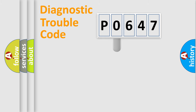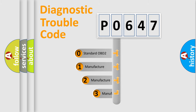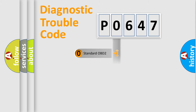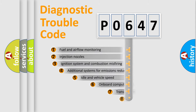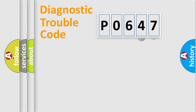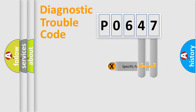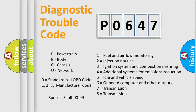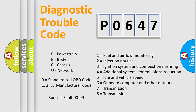This distribution is defined in the first character of the code. If the second character is expressed as zero, it is a standardized error. In the case of numbers 1, 2, or 3, it is a manufacturer-specific error. The third character specifies a subset of errors. Only the last two characters define the specific fault of the group, and this division is valid only when the second character is zero.